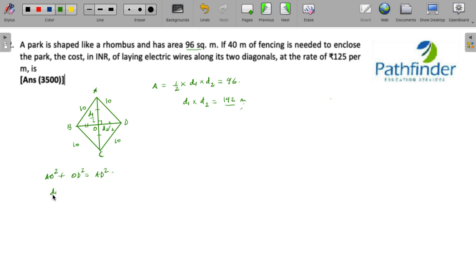Since AO is d1 by 2, so d1 by 2 whole square plus d2 by 2 whole square must be equal to AD square that is 100, which means d1 square plus d2 square must be 400.